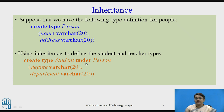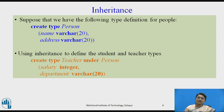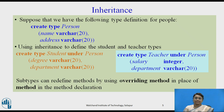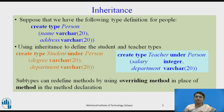Whenever we inherit, the student automatically holds the characteristics of a person as well. Similarly, we are defining one more type called Teacher. The teacher also inherits from the person type, so features like name and address are automatically included. The teacher is extended with salary and department features. So create type Student and create type Teacher are both defined as sub types, and in sub types we can also override methods.